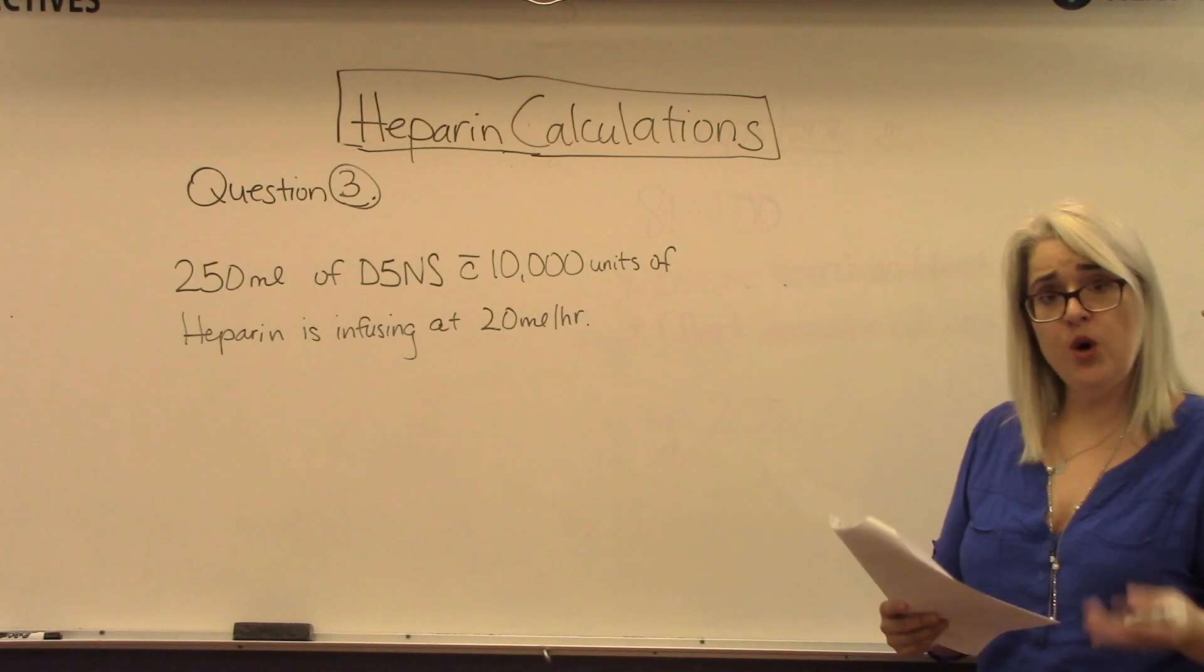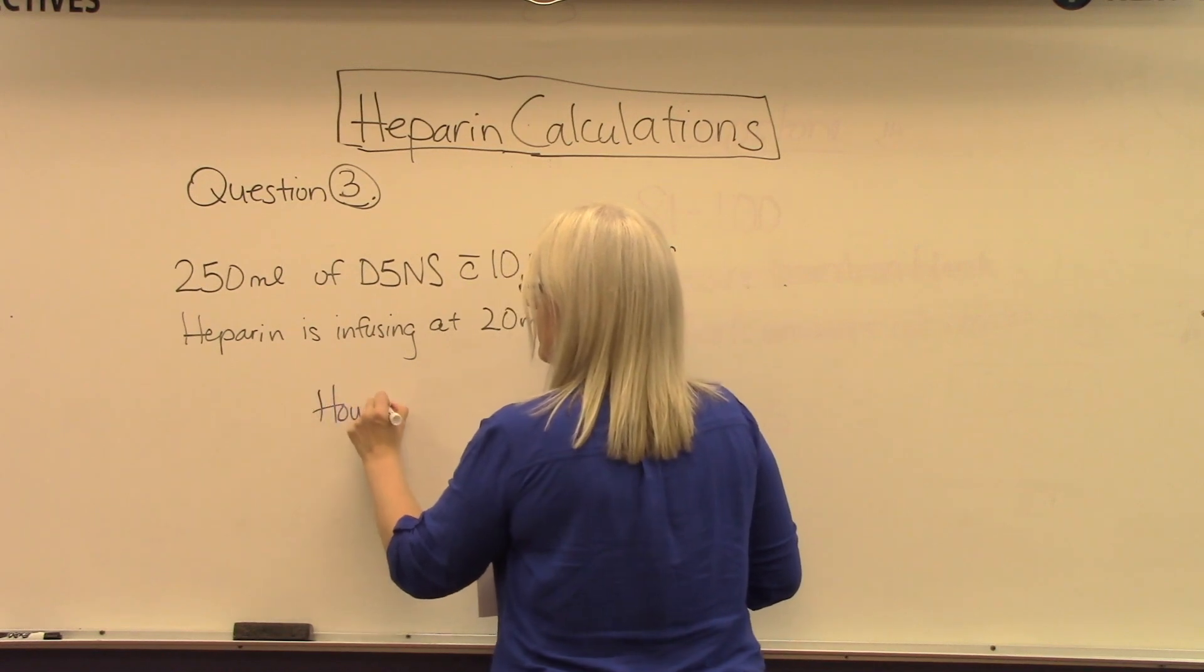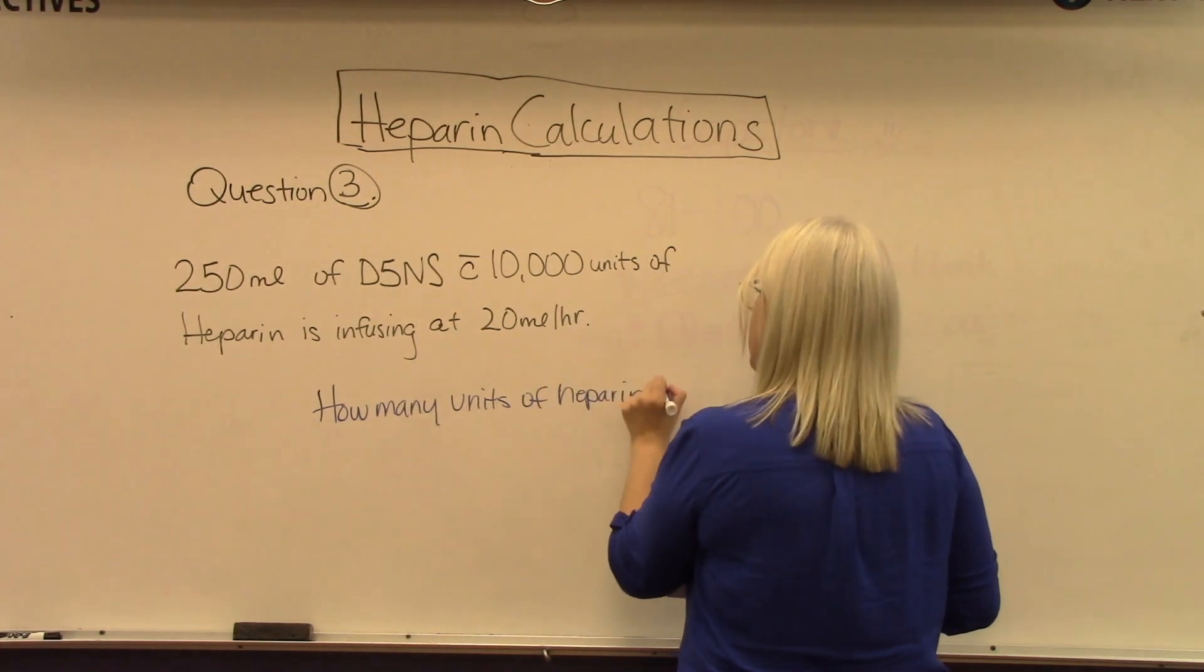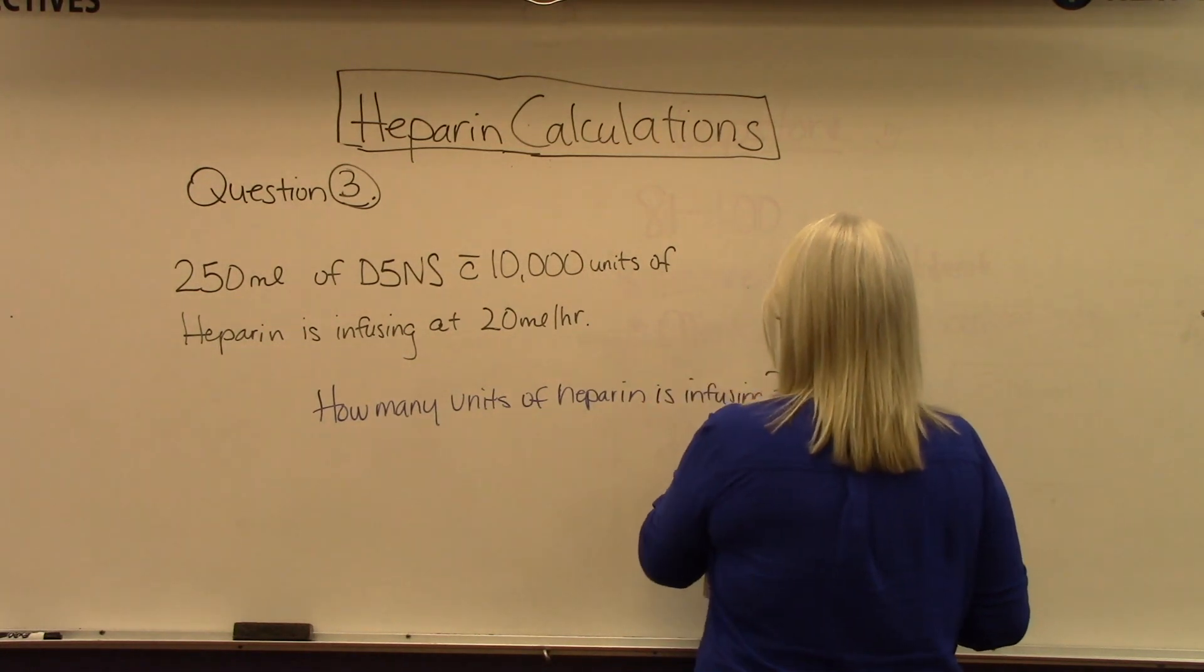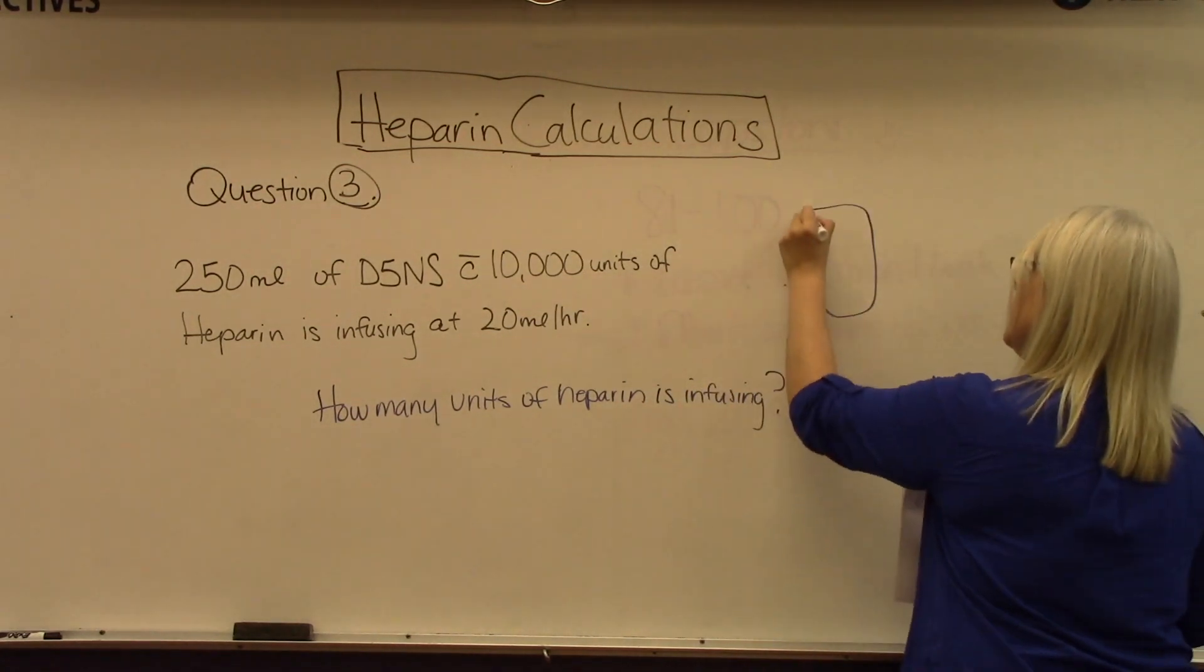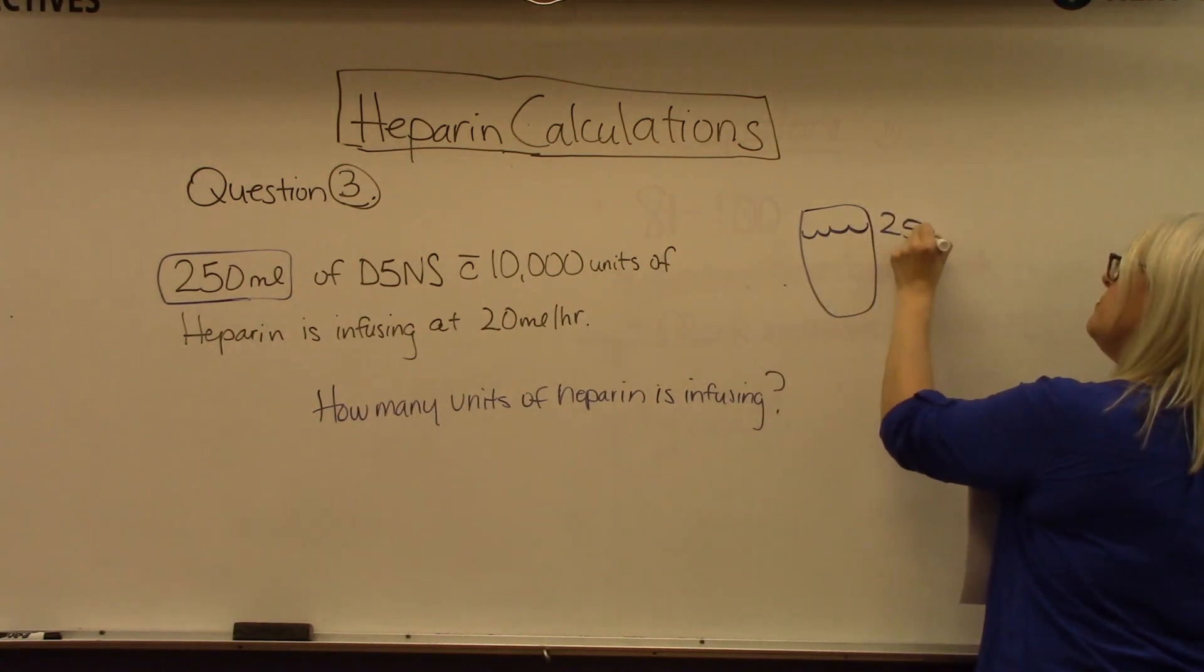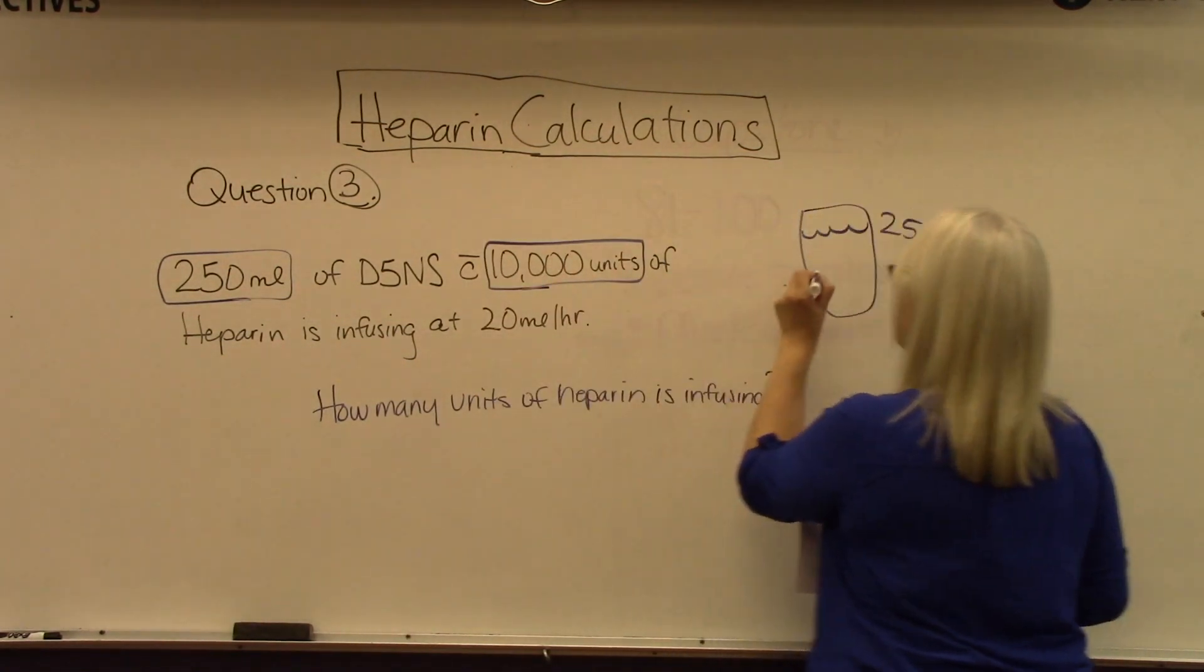What we need to know in order to answer the question is how many units of heparin is infusing. For that, it comes down to we have a bag of fluid. In this bag, it contains 250 milliliters of liquid, and within that 250 milliliters, there's 10,000 units.